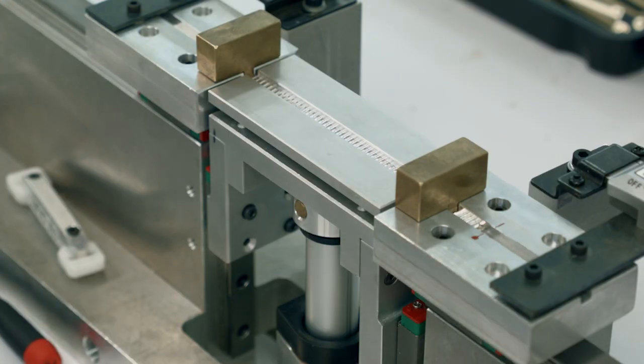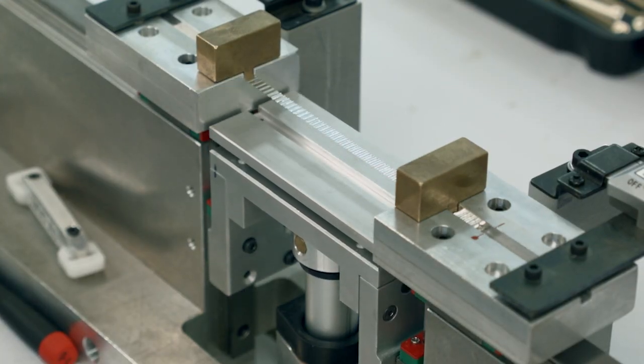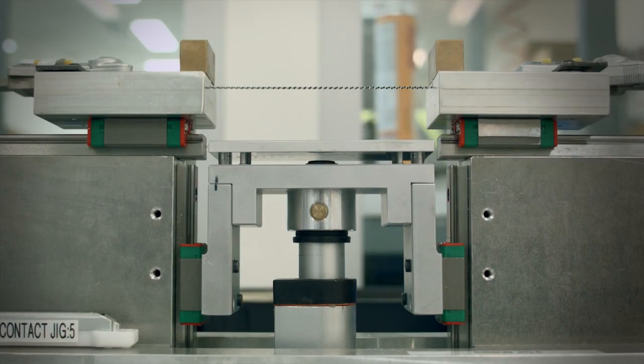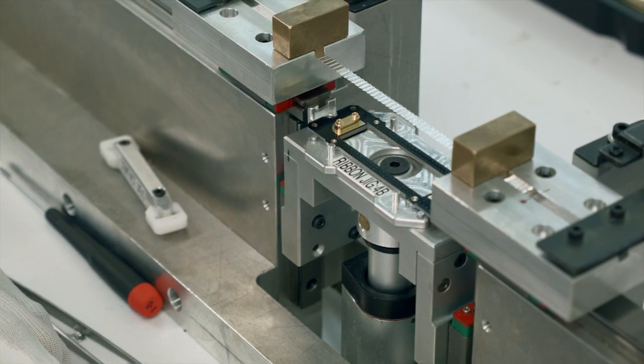The formed ribbon is then placed in our tensioning jig and a preset tension is applied to the ribbon which has been tuned for optimal resonance and frequency response. With this set, the ribbon element is then clamped in place on the motor spine.